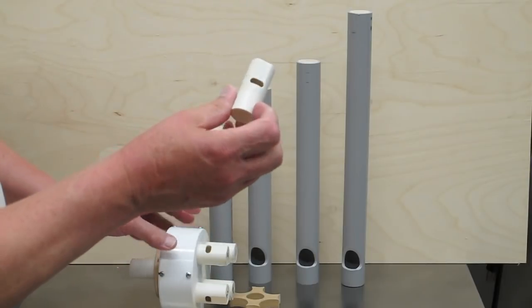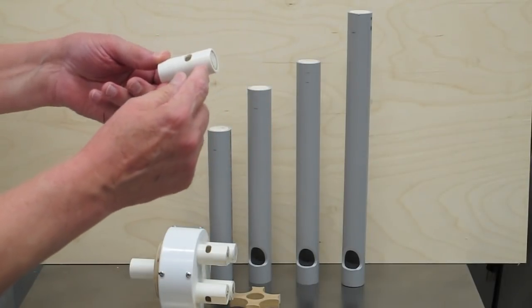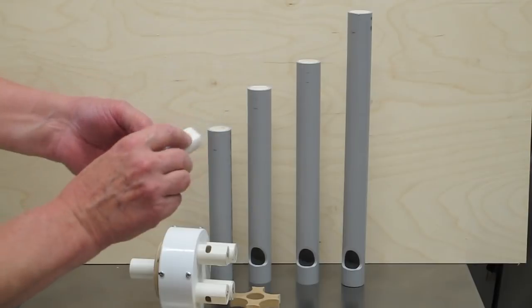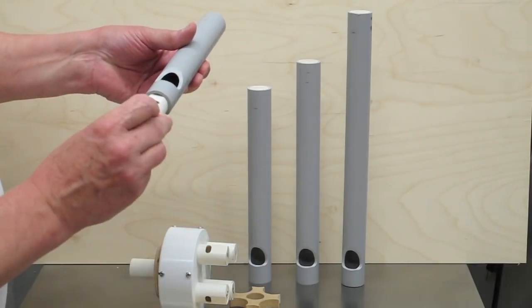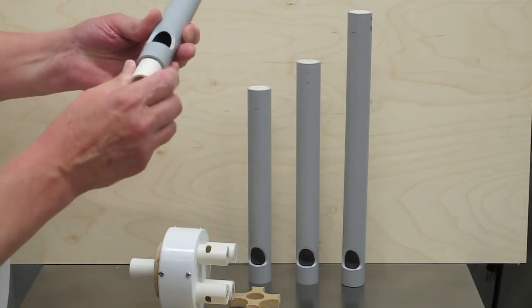I took a piece of three-quarter inch, chucked it up in the lathe, turned the outside diameter to where it would just go into the inside of that one-inch pipe.